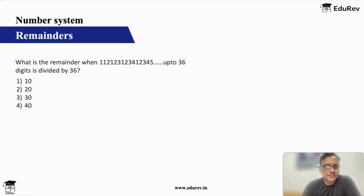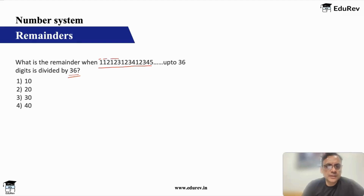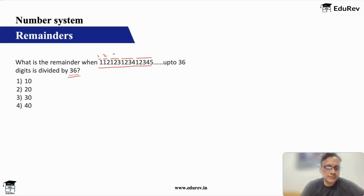We have now this number: up to 36 digits getting divided by 36. If you see the pattern, we have 1, then 1 2, then 1 2 3, then 1 2 3 4, then 1 2 3 4 5 — it is a series of natural numbers. I have one natural number, then two, then three, then four, then five — these are the number of digits in each block. So this should go up to how much to get 36 digits total? 36 equals the sum of 8 natural numbers, since sum of 8 natural numbers is 36.